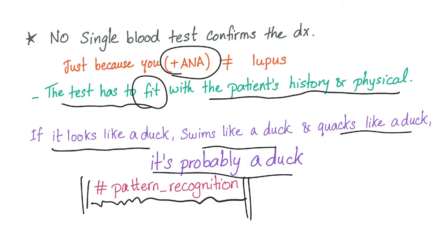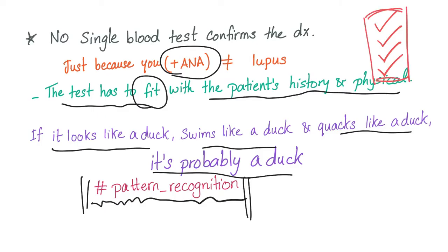That's why rheumatology is more difficult than, for instance, hematology. In hematology, you do a bone marrow biopsy, send it to the pathologist, and you have the diagnosis. Rheumatology is more difficult — you need a certain history, with a certain physical exam, with certain imaging, and certain lab investigations. Together, if they fit the pattern, you can diagnose it.